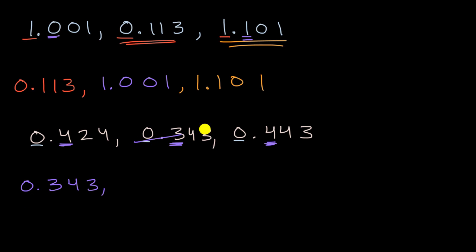And now, so I've already used that one. And so I need to compare these two numbers. They have the same number of ones. They have the same number of tenths. So then we move to the hundredths. So here I have two hundredths. Here I have four hundredths. This one has less hundredths than this one. So the one on the left is going to be the next smallest number. So then we have 0.424.